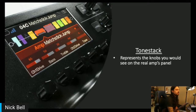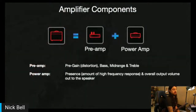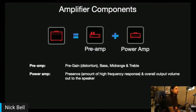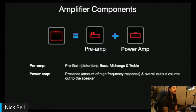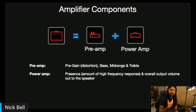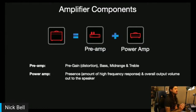The tone stack represents the knobs you would see on a real amp's panel. An amp is essentially two parts: you have your preamp and the power amp. The preamp is responsible for your pre-gain — really half the voice of the amp. That's where our pre-gain, our distortion, and the EQ stack with bass, mids, and treble come from. The power amp is what pushes your sound out of your speakers. The presence parameter in your tone stack speaks directly to the power amp, controlling the amount of high-frequency response from the power amp.